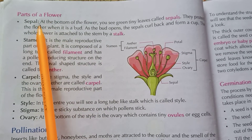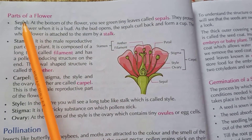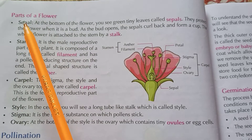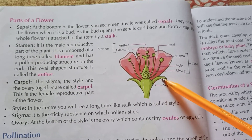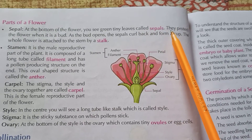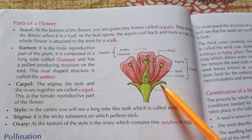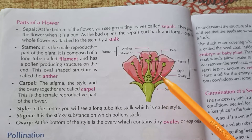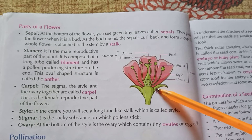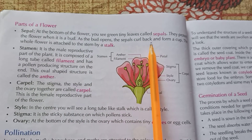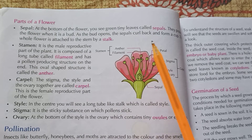Parts of a flower: at the bottom of the flower you see green tiny leaves called sepals. These are the bottom part, green in color. They protect the flower when it is a bud, and they protect the flower from insects. When the flower comes out it is green — we call these sepals. As the bud opens, the sepals curl back and form a cup.